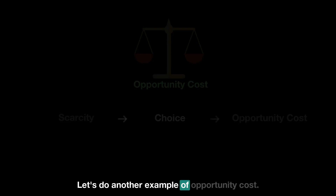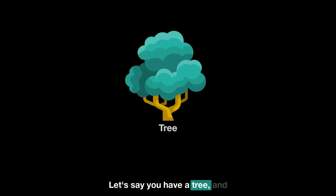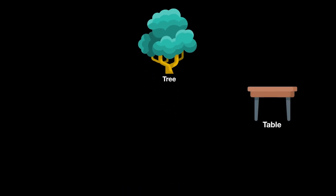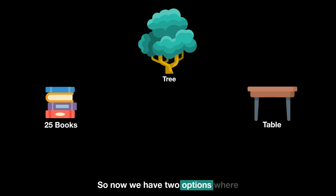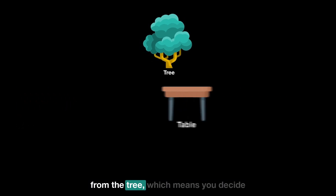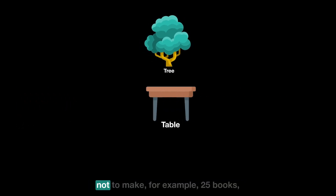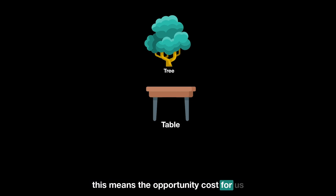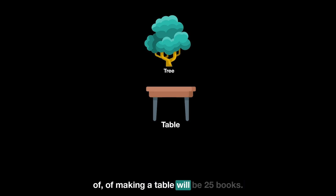Let's look at another example of opportunity cost. Say you have a tree and you can either make a table from it or make 25 books. If you decide to make the table, you decide not to make the 25 books. This means the opportunity cost of making the table is 25 books.